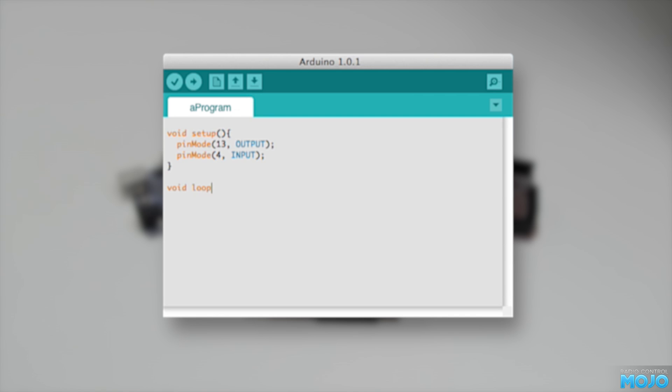Next is the main program. Arduino has a nice function called pulse in, which returns the length of a pulse. That gets stored in a variable called pulse width.